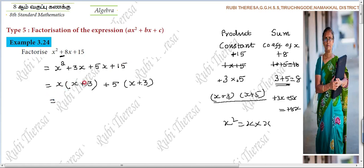Binomial factor. X plus 3. Common. Put it in line, x plus 3, up, side. X plus 3. What is remaining here? X. This is remaining. Plus 5.